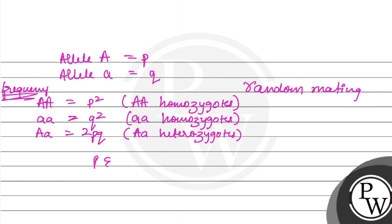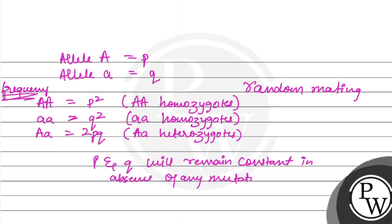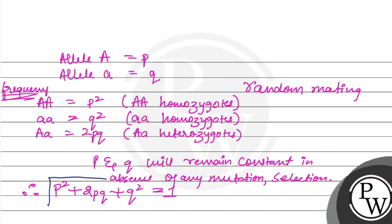In the absence of any mutation, selection, or any other evolutionary influence, the algebraic equation will be: p² + 2pq + q² = 1. So the algebraic equation is p² + 2pq + q² = 1, and p and q will remain constant in the absence of any mutation, selection, or any other evolutionary influence.